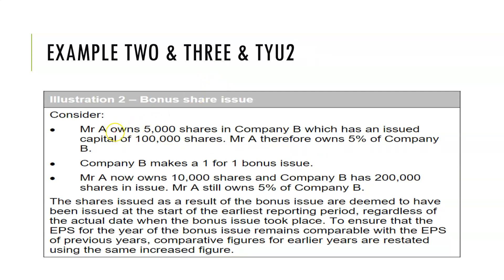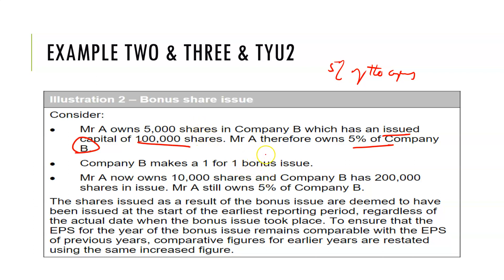Mr. A owns 5,000 shares in Company B, which has an issued share capital of 100,000 shares, so Mr. A owns 5% of the company. After a one-for-one bonus issue, he owns 10,000 shares, but the whole company's shares have increased from 100,000 to 200,000. So he now owns 10,000 out of 200,000 — still 5% of the company.